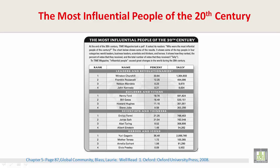The Most Influential People of the Twentieth Century. At the end of the Twentieth Century, Time Magazine took a poll. It asked its readers who were the most influential people of the century. The chart below shows some of the results — some of the top people in four categories: World Leaders, Business Leaders, Scientists and Thinkers, and Heroes.